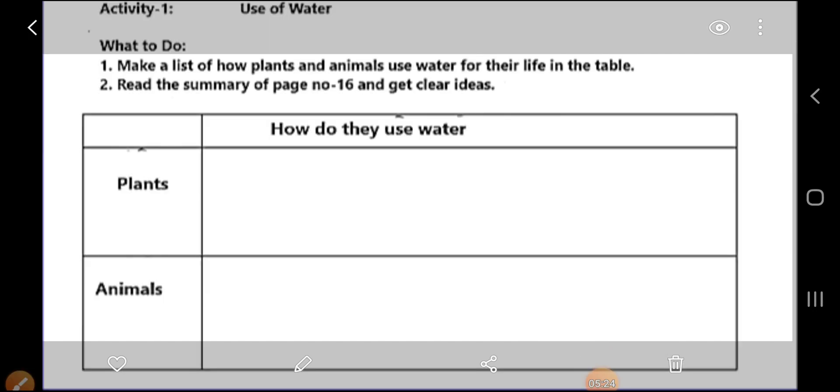Now this is your turn, now you write your idea. Here is the instruction, you read the instruction properly and make a list of how plants and animals, how do they use water. So here is a place you write one, two, or three, you write your animals one, two, three like this. Make a list how plants and animals use water for their life.